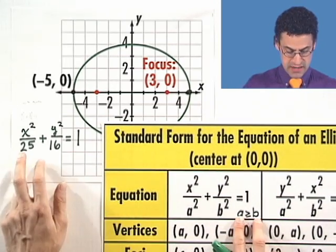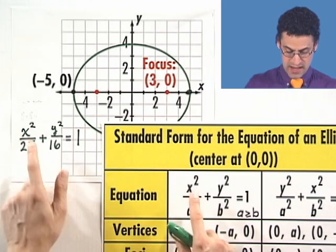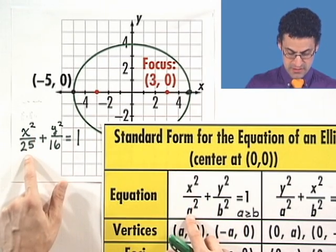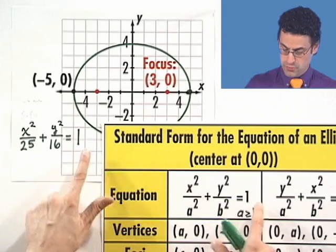And you can see how that conforms with the formula we have here. We see the a is greater than or equal to b, 25 is greater than or equal to 16, and I've got x-squared divided by a-squared plus y-squared divided by b-squared equals one.